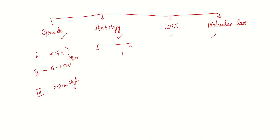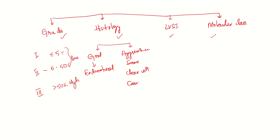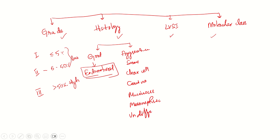According to histology, tumors are divided into less aggressive and aggressive types. Less aggressive ones are the endometrioid carcinomas. Aggressive ones include serous carcinoma, clear cell carcinoma, carcinosarcoma, mucinous carcinomas with GI differentiation, mesonephric carcinoma, and undifferentiated carcinoma. Basically, anything other than the endometrioid variant is considered aggressive histology.